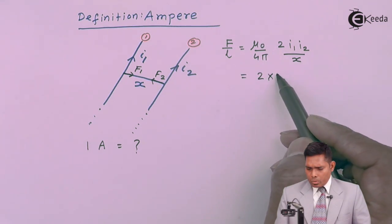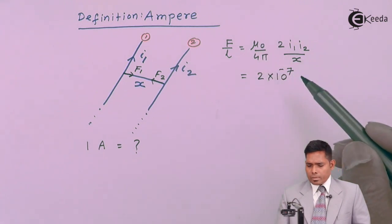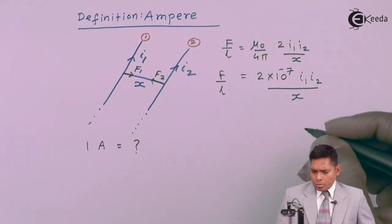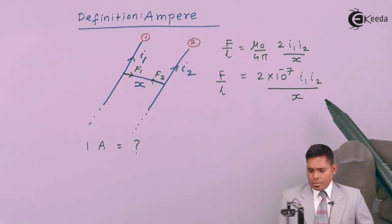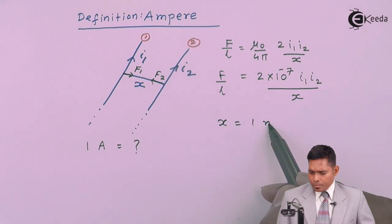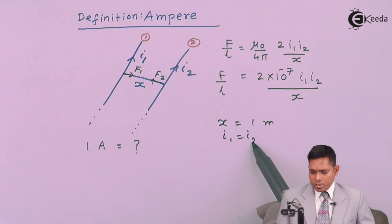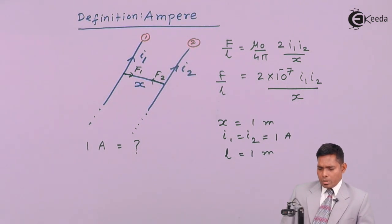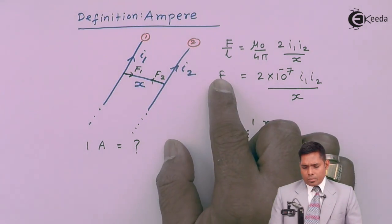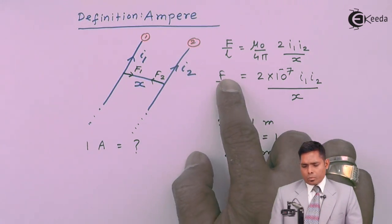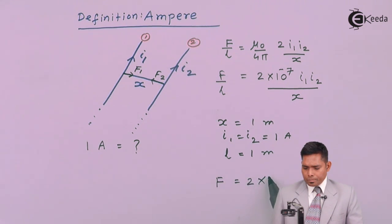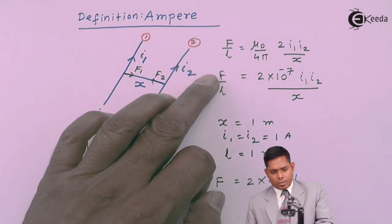This force per unit length is nothing but 2×10⁻⁷ × i1×i2 divided by x. If I put x, i1, and i2 each equal to one — that means the distance of separation is one meter, the currents are equal and both are one Ampere, and the length L is one meter — then the expression for force per unit length comes down to a value in Newton per meter.